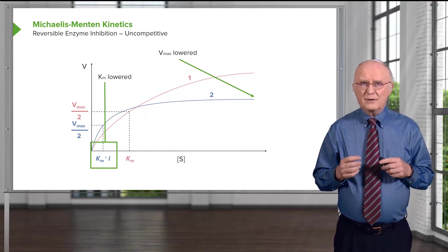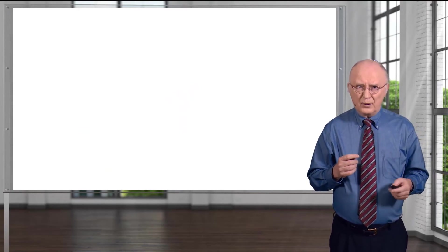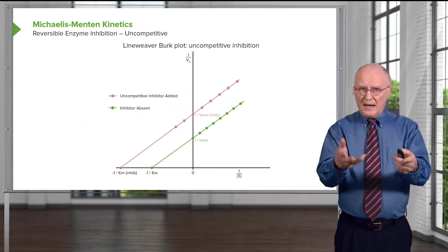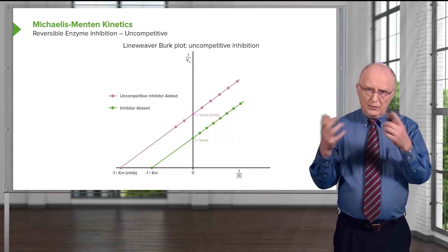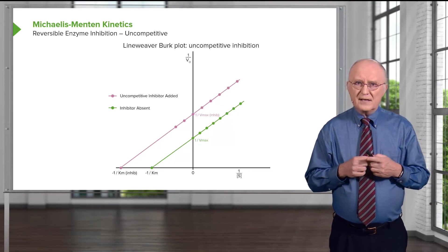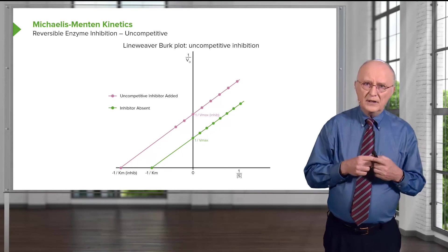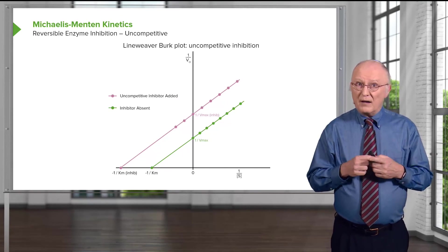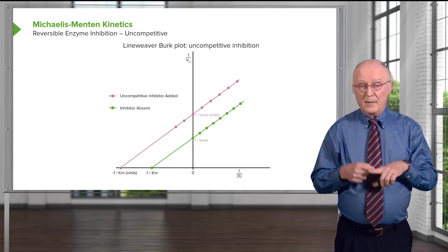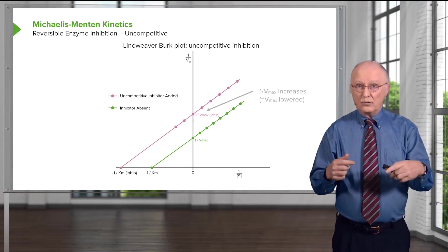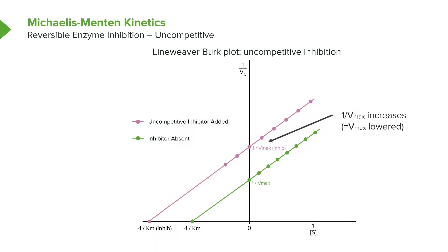That confusing result is reflected on the Lineweaver-Burk plot. The green line again shows the uninhibited reaction with 1/Vmax as the Y-intercept and −1/KM as the X-intercept. The Lineweaver-Burk plot for the uncompetitive reaction shows a value higher on the Y-axis for 1/Vmax — reflective of Vmax having decreased, so 1/Vmax increased. We also see the X-intercept has moved farther to the left, meaning −1/KM is farther away from zero, which is what happens when we have a lower KM.